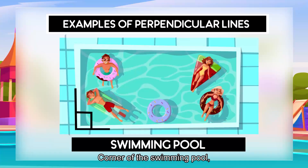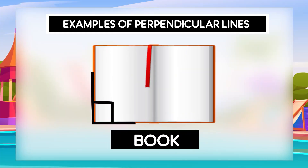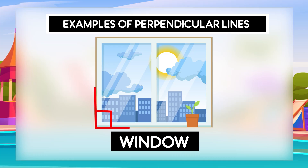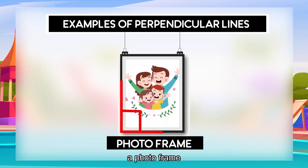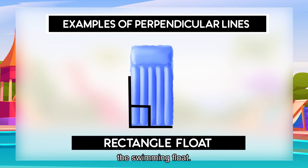Corner of the swimming pool. A book. A window. A photo frame. The swimming float — shown here in a side view.